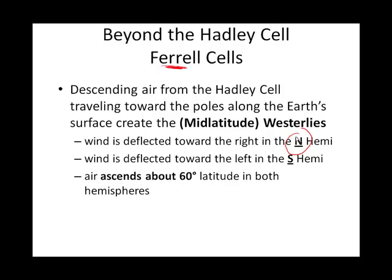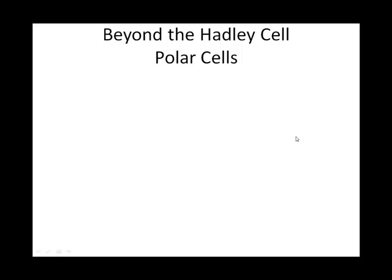The Ferrel cell ends at about 60 degrees latitude in both hemispheres, where it ascends and clashes with the third cell, the polar cell. Where they clash, we call that the polar front. So in the northern hemisphere we have a Hadley cell and a Ferrel cell, and in the southern hemisphere we also have a Hadley cell and a Ferrel cell — three cells and three cells total, one set per hemisphere.